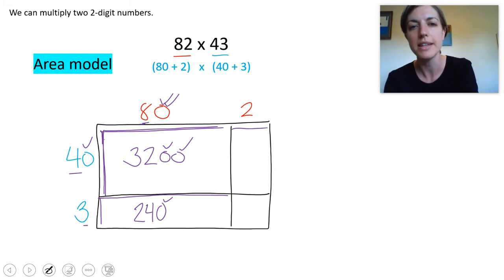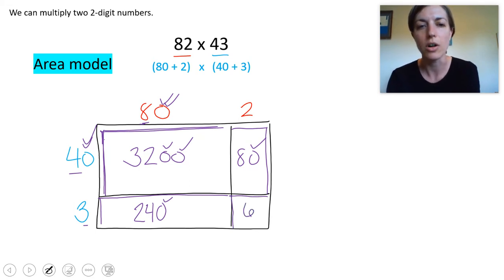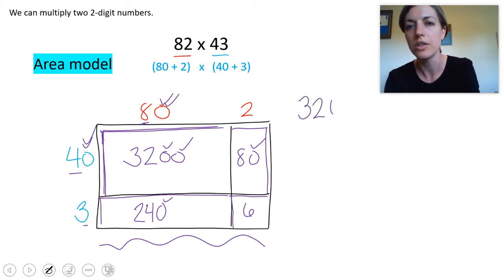For this top right section we do 2 times 40 which is 80. Again check your zeros. And to do the bottom we do 2 times 3 which is just 6. Now I have all of these sections I have to add them together. So we'll do 3200 plus 240 plus 80 plus 6.